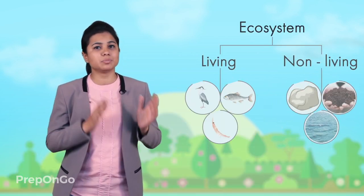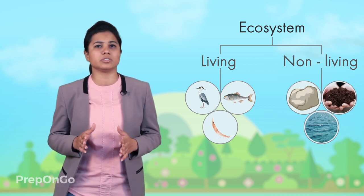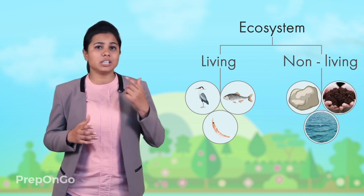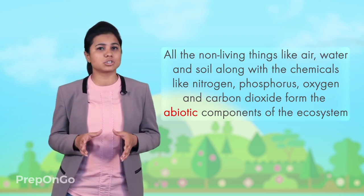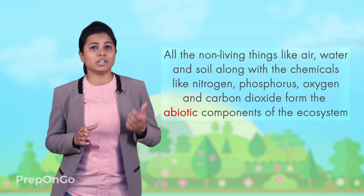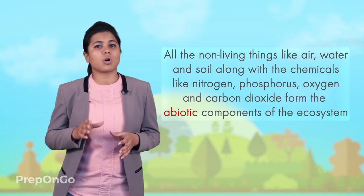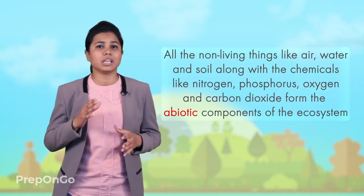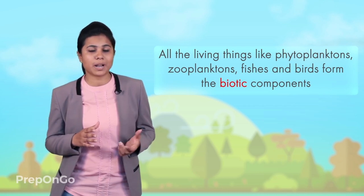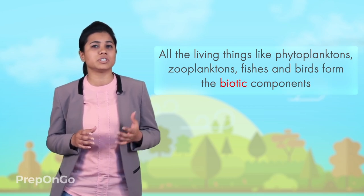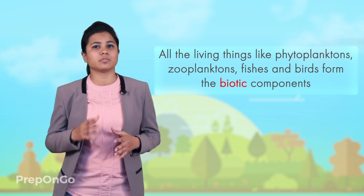From the above example, we can say that the ecosystem has both living and non-living constituents. From this, we can conclude that the ecosystem has mainly two components. All the non-living things like air, water, and soil along with the chemicals like nitrogen, phosphorus, oxygen, and carbon dioxide form the abiotic component of the ecosystem. All the living things — as in the case of ponds, the phytoplanktons, zooplanktons, fishes, and birds — form the biotic components of the ecosystem.